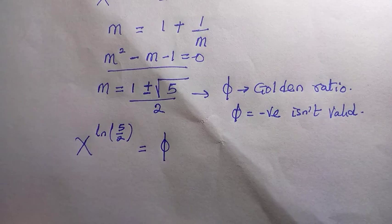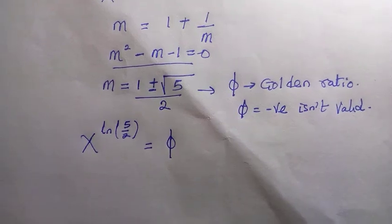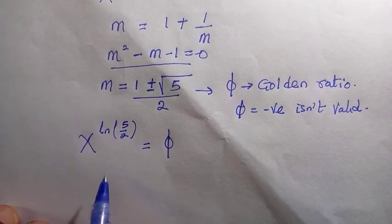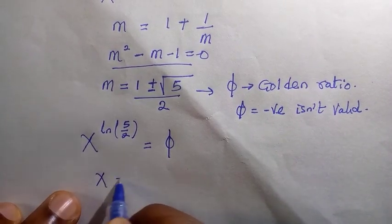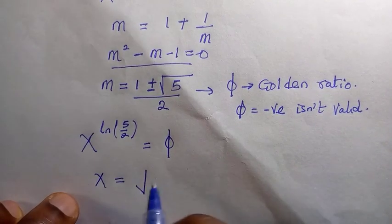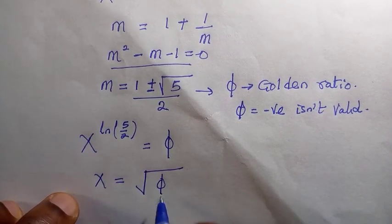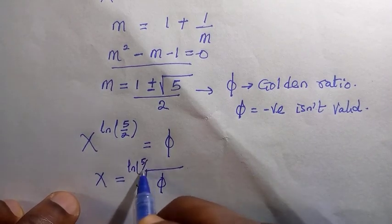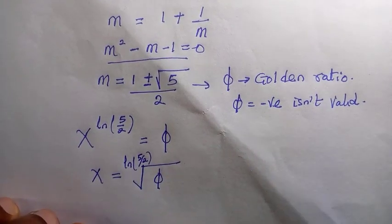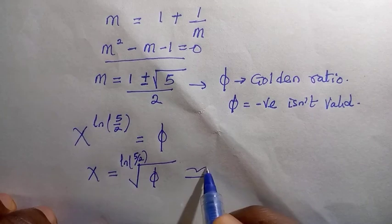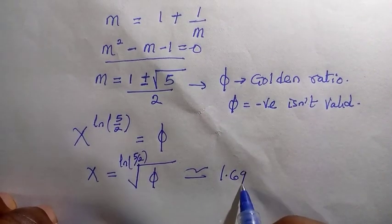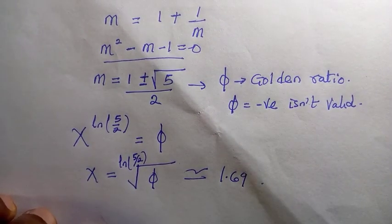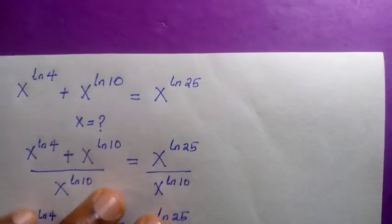To find x, we take the ln(5/2) root of both sides. So x equals phi raised to the power of 1 over ln(5/2), which is approximately 1.69. Press the calculator to verify.